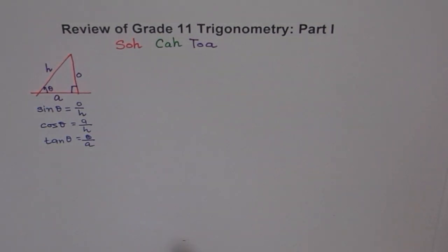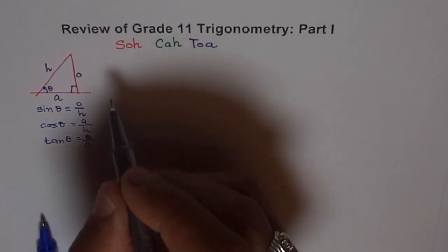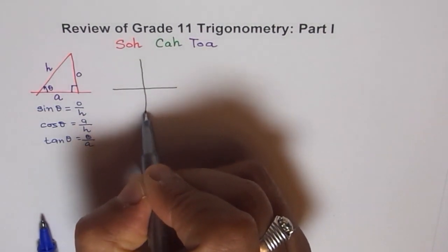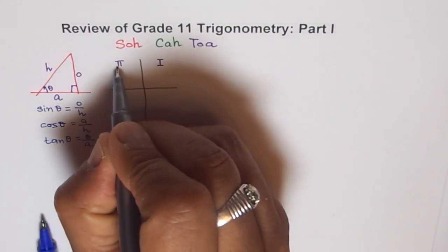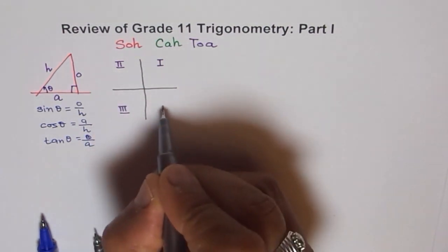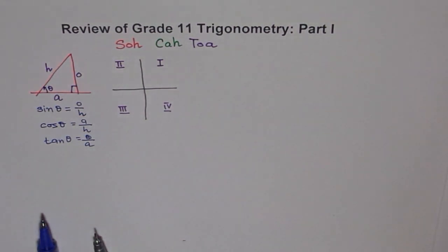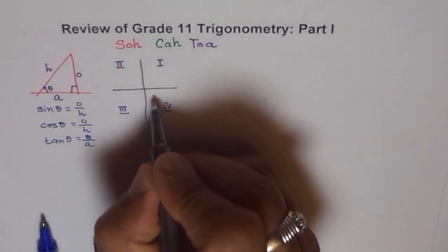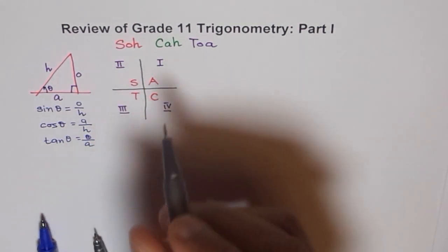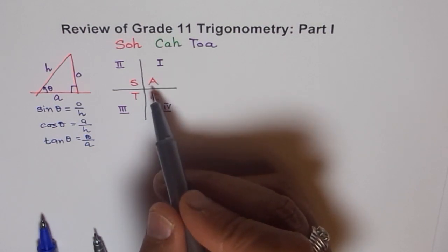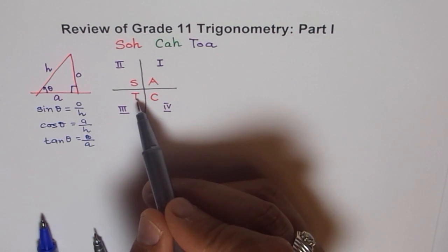The second thing you learned is there are four quadrants. Quadrant one, quadrant two, quadrant three, and quadrant four. In these quadrants we have the CAST rule — C, A, S, T — starting from quadrant four: all ratios are positive in quadrant one, only sine is positive in quadrant two, tan is positive in quadrant three, and cos is positive in quadrant four.